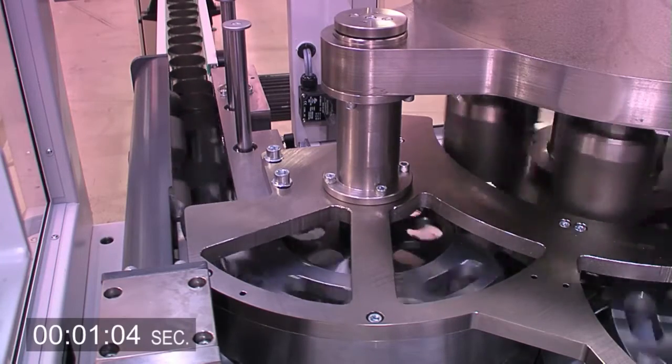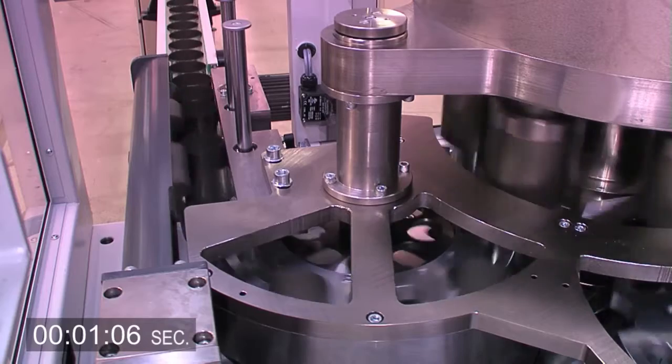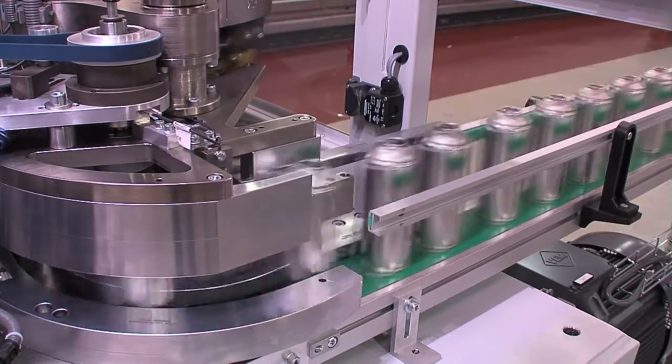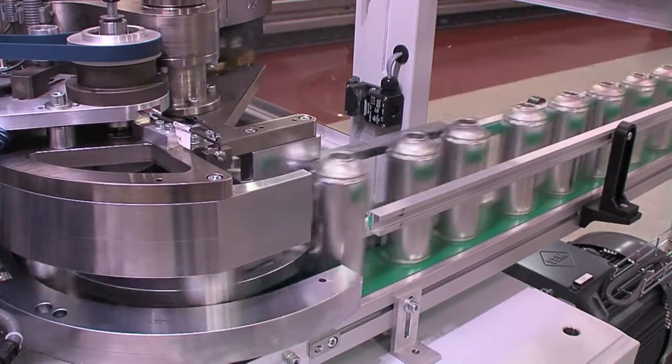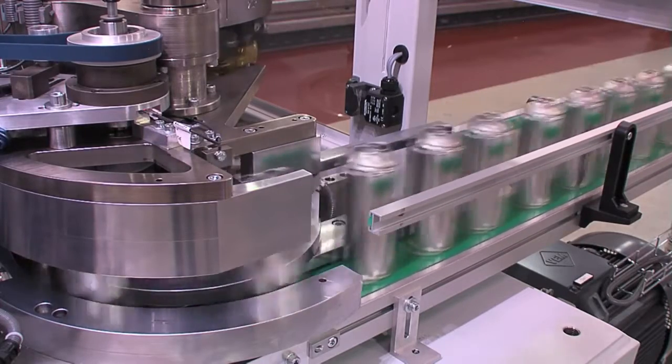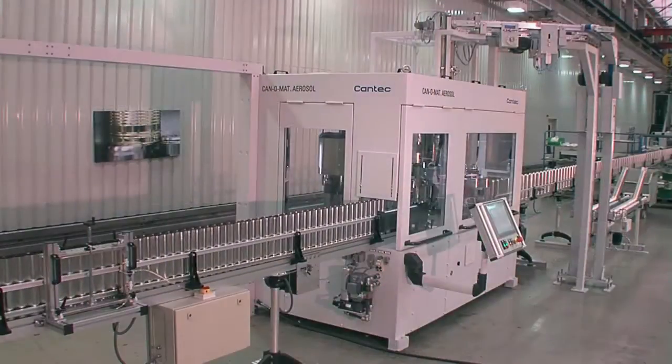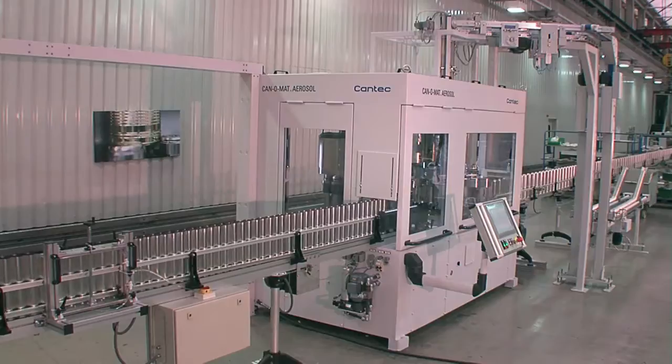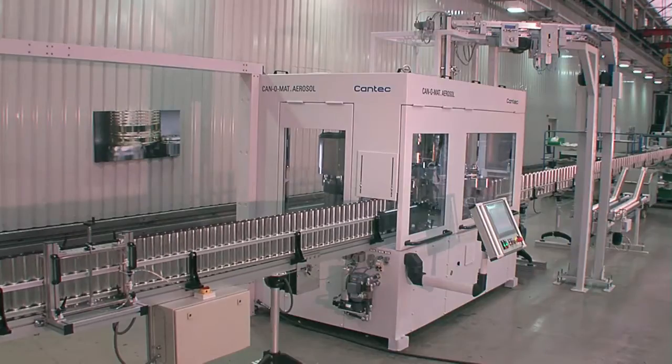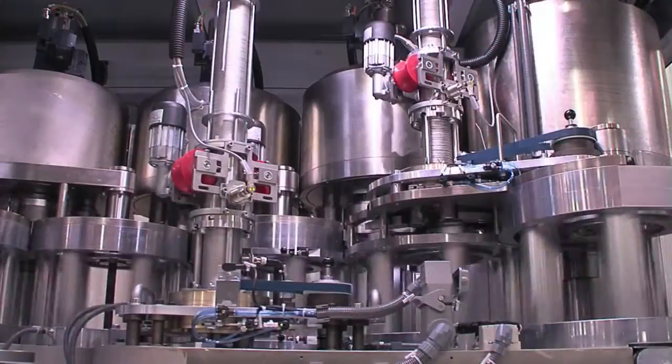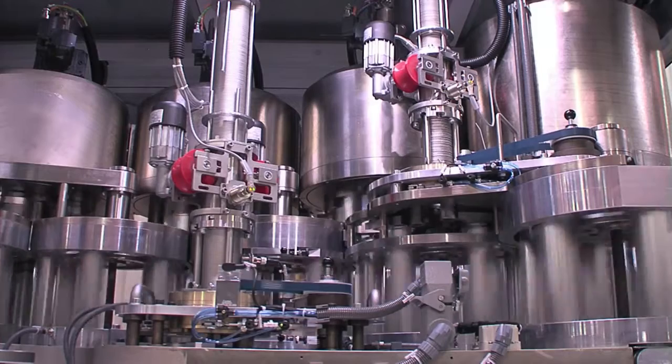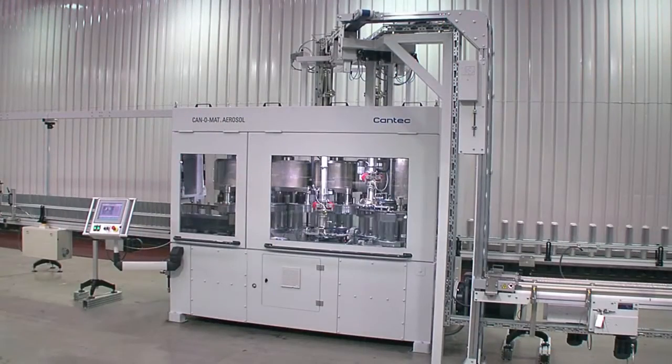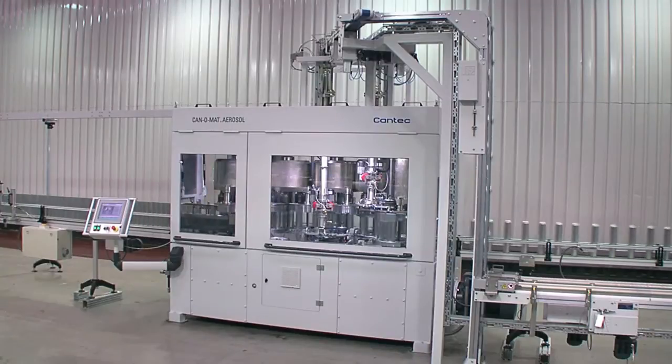Thanks to the extremely fast automatic height adjustment, the extra time for height change is negligible and need not be taken into account for the Kanamat in production planning. The Kanamat aerosol is a machine with a host of innovative features and automatic can height adjustment to improve the efficiency, quality and performance of your production. Down gauging aerosol cans is reality.